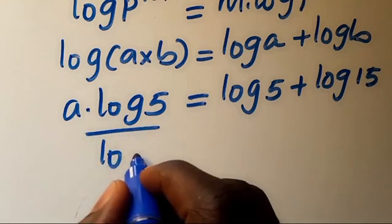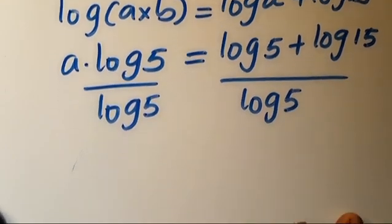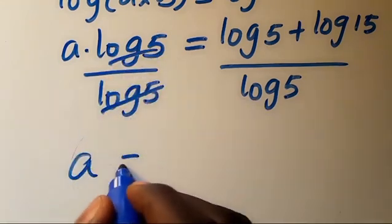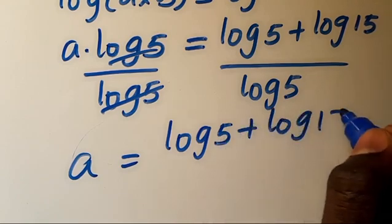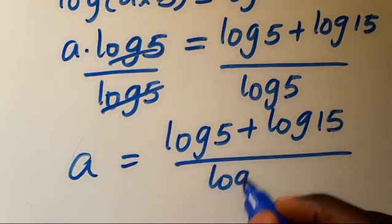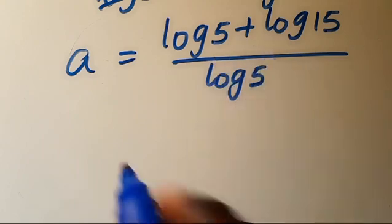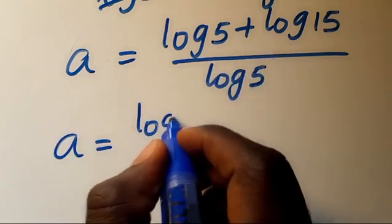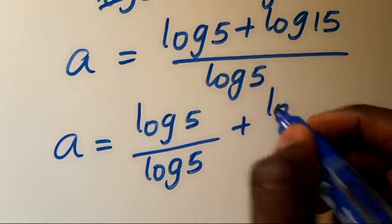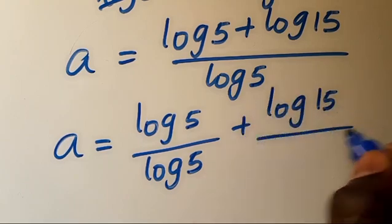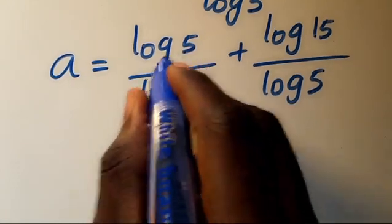Dividing through by log 5: log 5 cancels on the left side, so a equals log 5 plus log 15, all divided by log 5. Splitting the fraction: a equals log 5 divided by log 5, plus log 15 divided by log 5. Log 5 divided by log 5 gives us 1, plus log 15 divided by log 5.